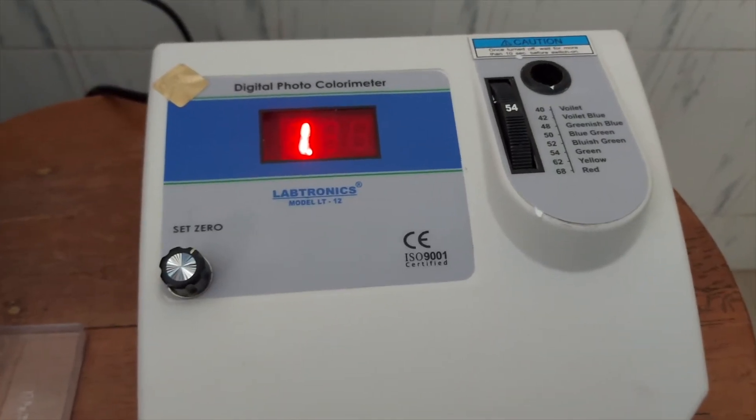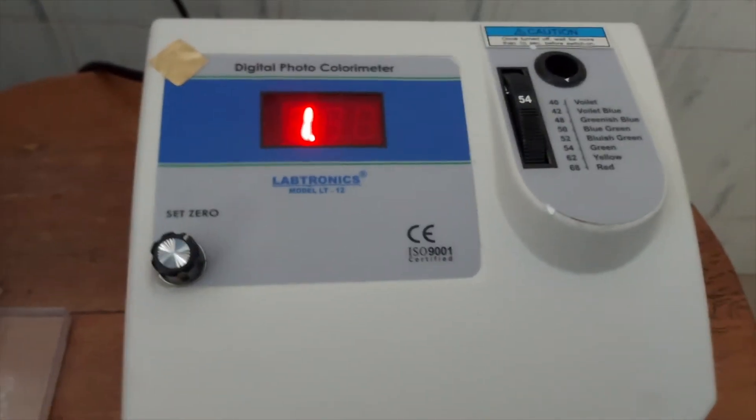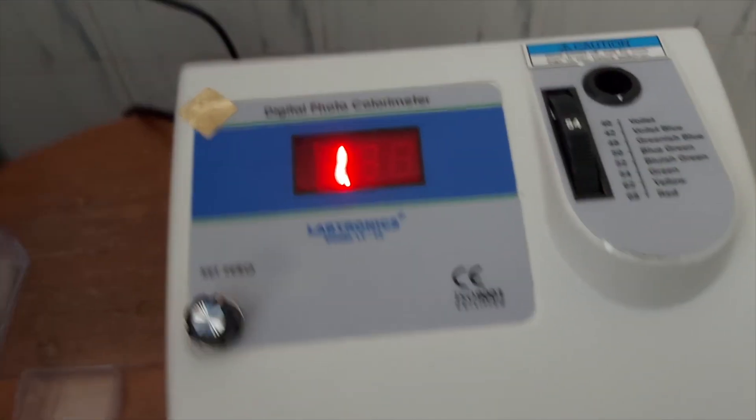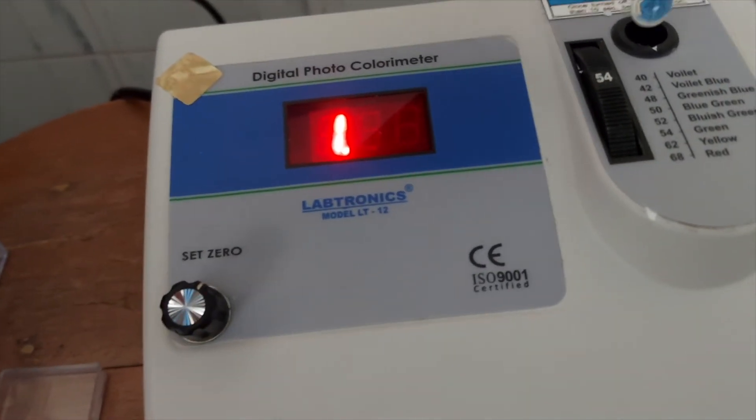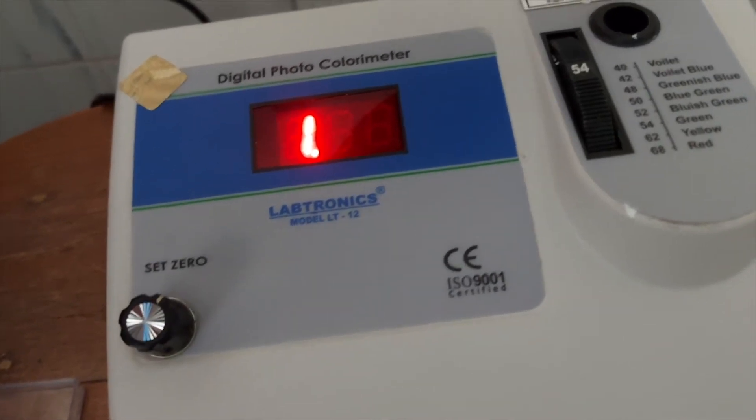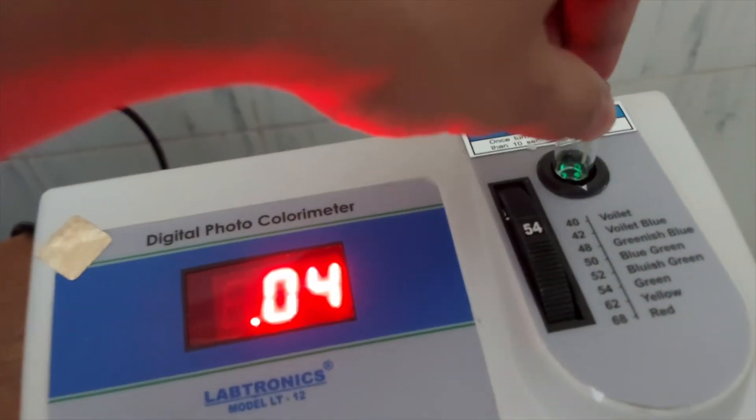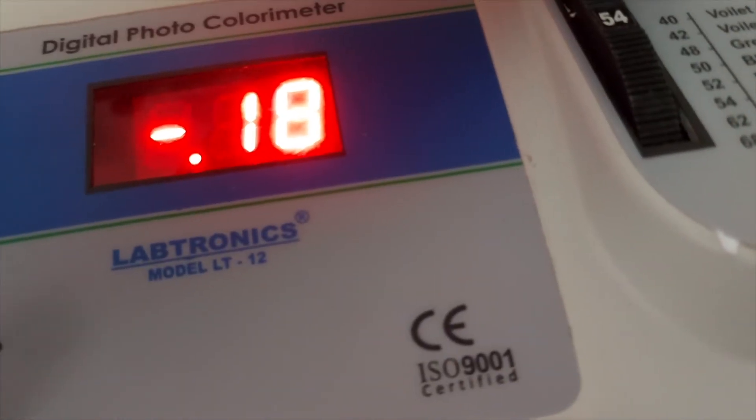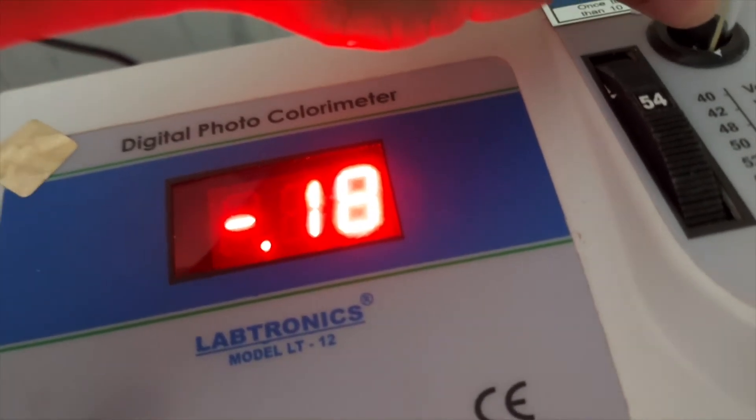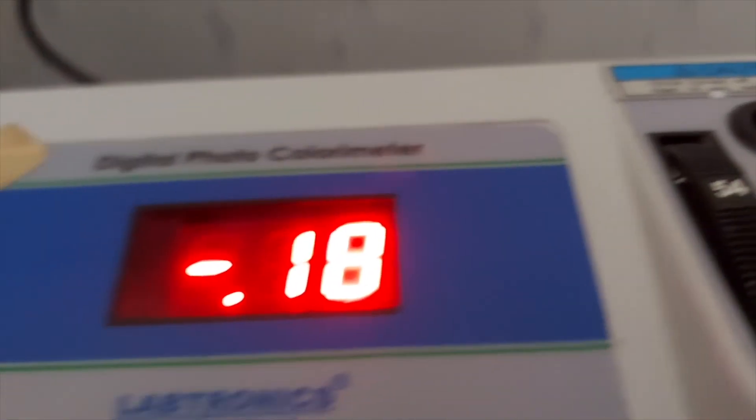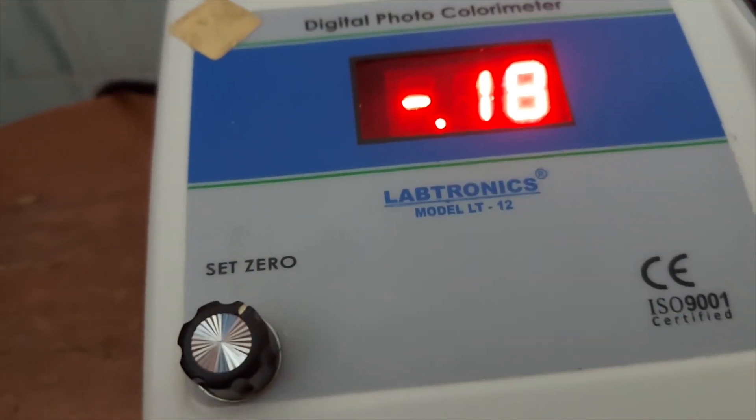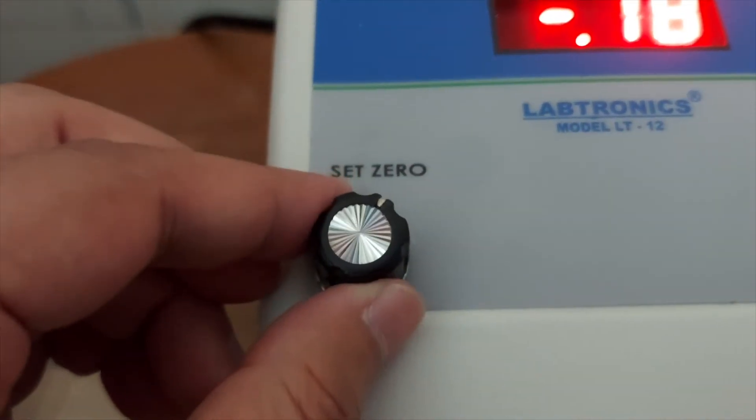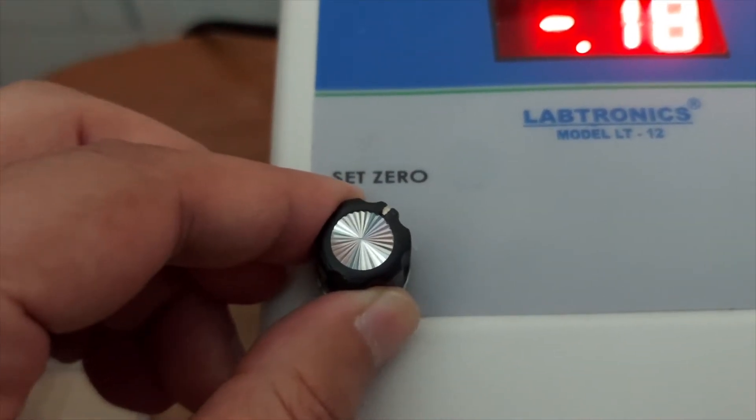So it's already been five minutes since we started the machine. Now we are going to calibrate the machine. For that, we are going to put the distilled water in the housing of the machine, and we have to gently push the cuvette and make sure the two white lines align together. Now we see that the reading is minus 0.18. We have to set it to zero by rotating the knob.